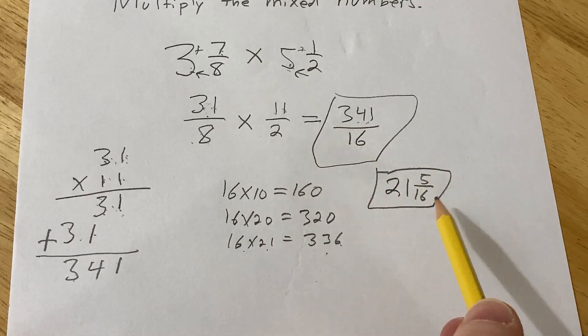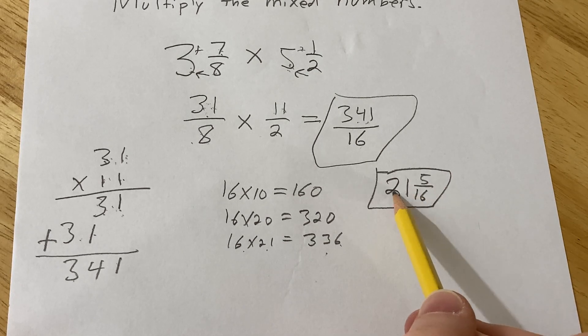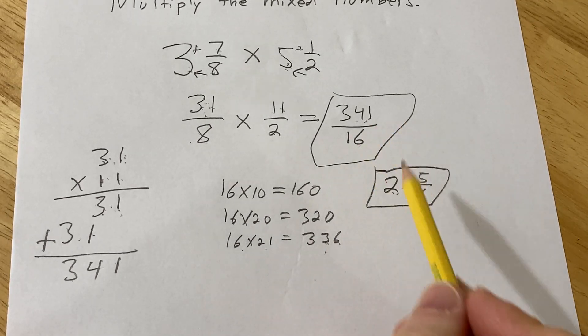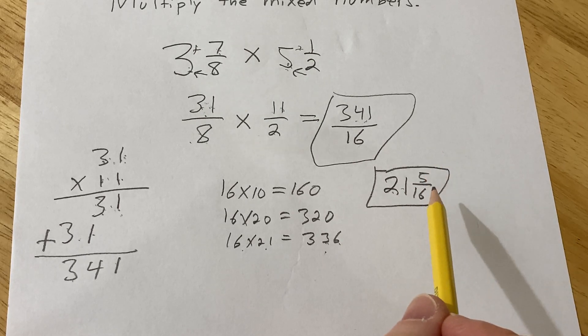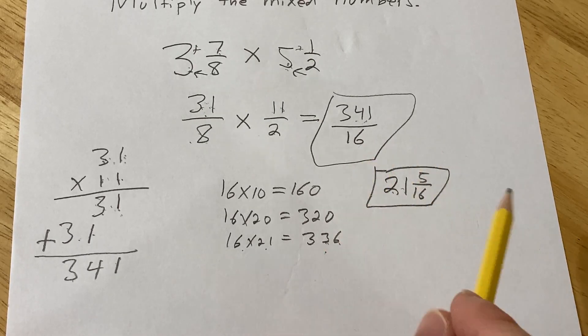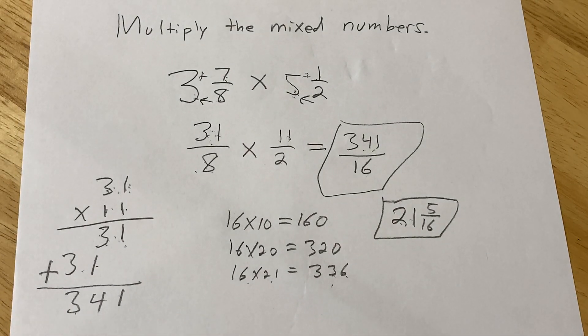You can check your answer by multiplying these. 16 times 21 is 336, plus 5 is 341. So both of these are exactly the same thing. So I hope this video has been helpful to someone. Good luck.